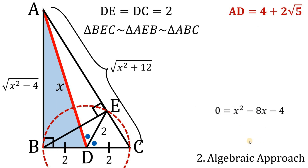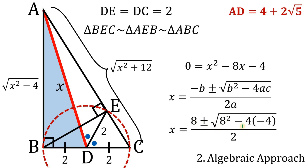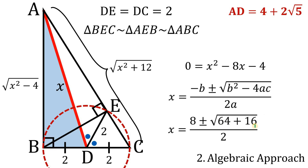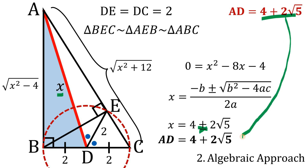Setting this to zero: x² minus 8x minus 4 equals 0. Using the quadratic formula: x equals (8 ± √(64 + 16)) / 2 = (8 ± √80) / 2. Since √80 equals 4√5, this simplifies to x equals 4 ± 2√5. Since x cannot be negative, x equals 4 plus 2 times square root of 5. Therefore AD equals 4 plus 2 times square root of 5.